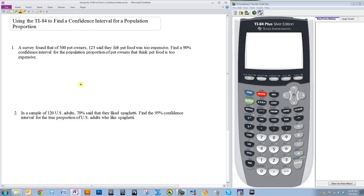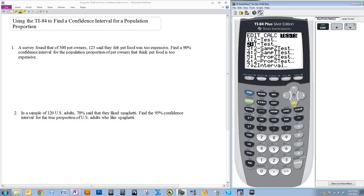In this video, I'm going to talk about how to use the TI-84 to find a confidence interval for a population proportion. Whenever you're trying to find a confidence interval for a population proportion, there's only one function you need in your calculator, and it's under STAT, TEST.